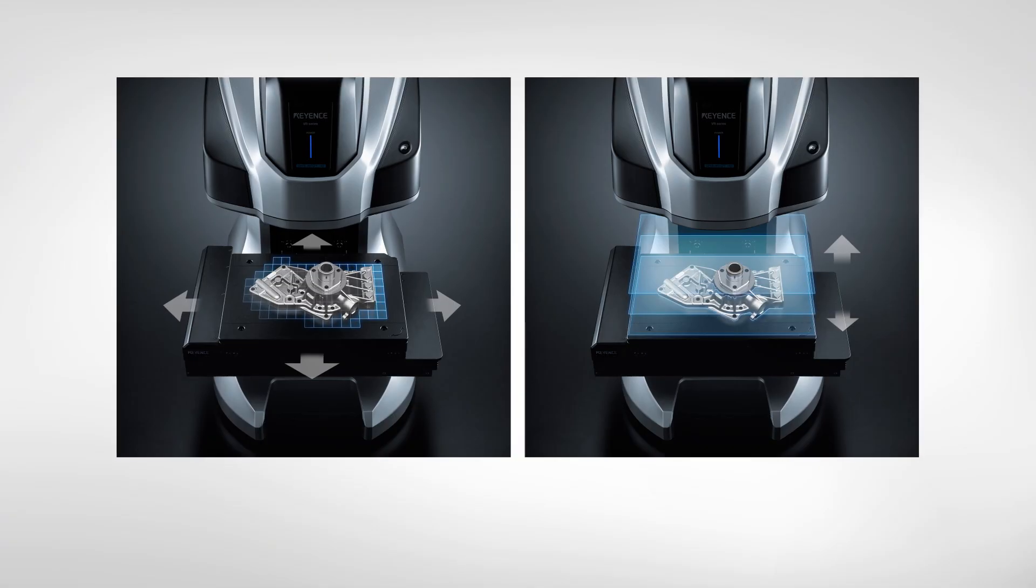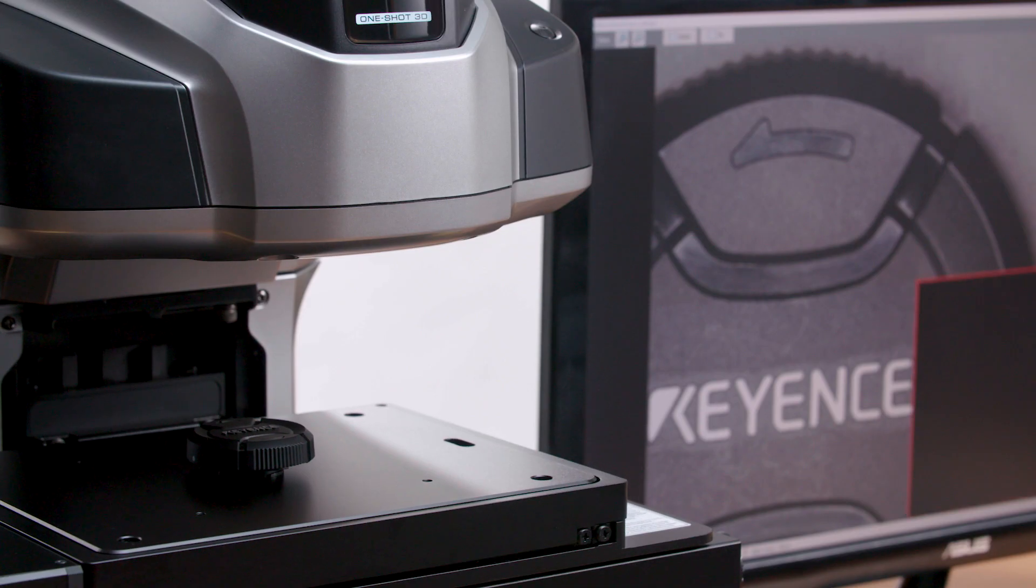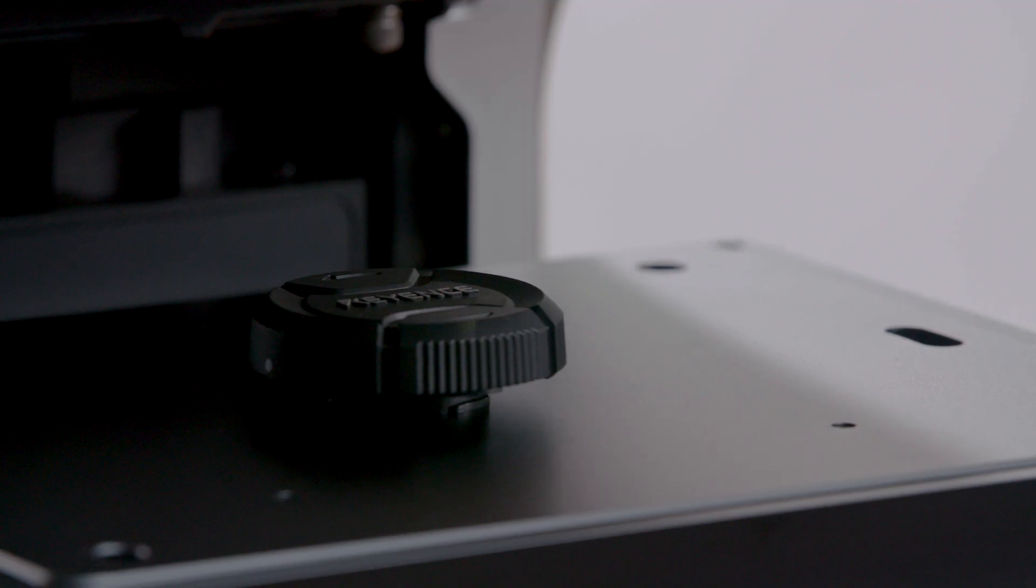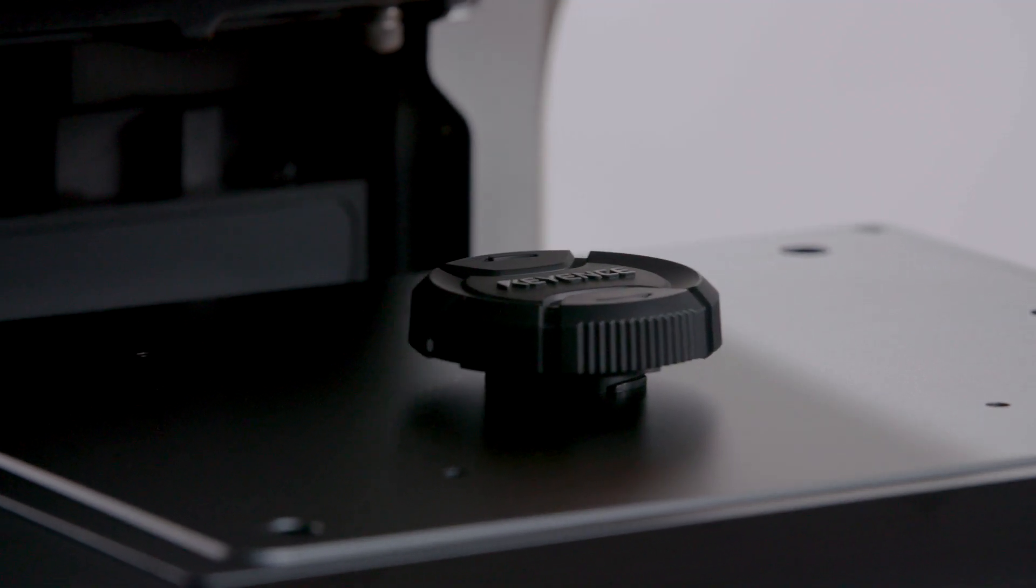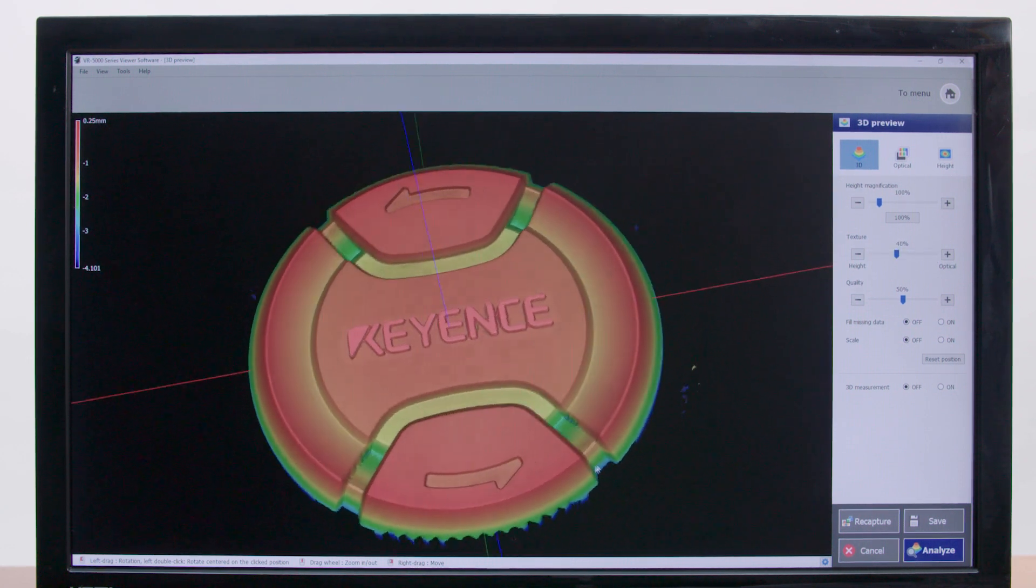The VR now incorporates smart measurement. This new feature automatically determines the location and size of a sample and optimizes lighting conditions with a single click. 200 mm x 100 mm x 50 mm parts can be measured quickly and easily without the need of a skilled operator.